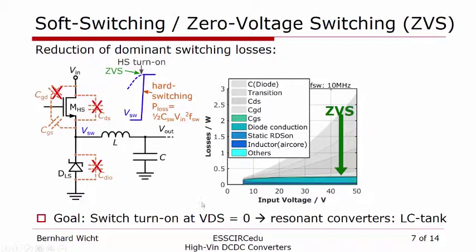If we plot the losses over voltage, we see that losses significantly increase for higher input voltages. On the other hand, zero voltage switching and soft switching bring down a significant part of those losses, making it very attractive.